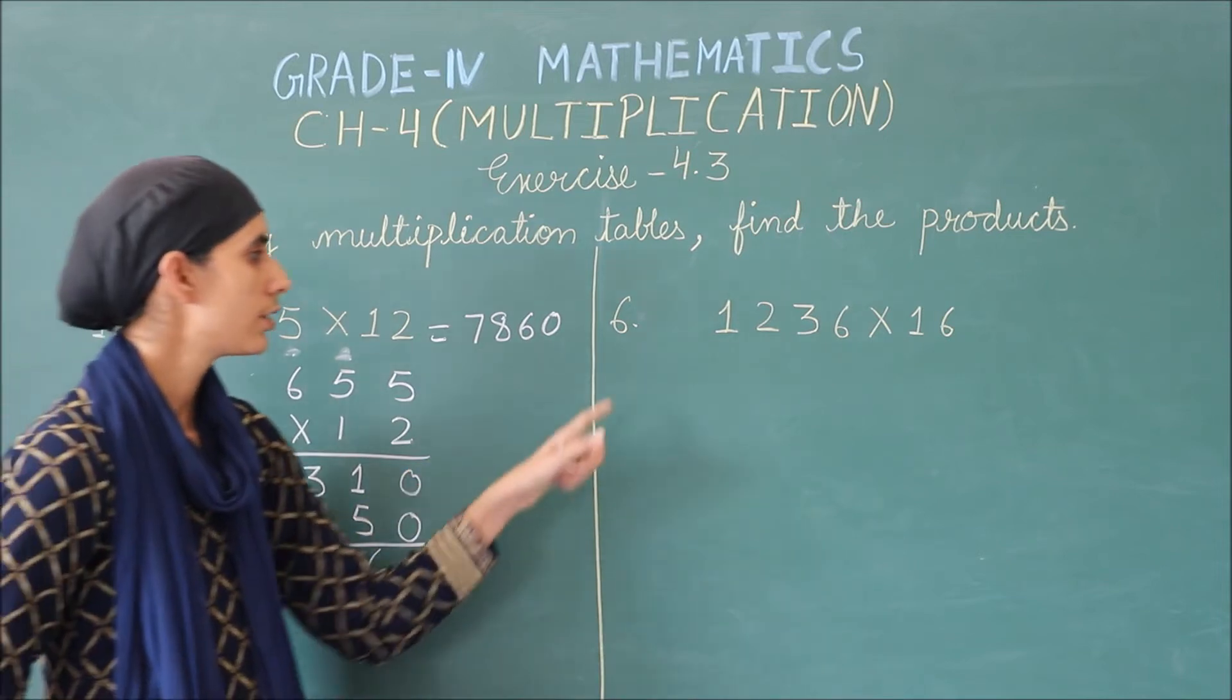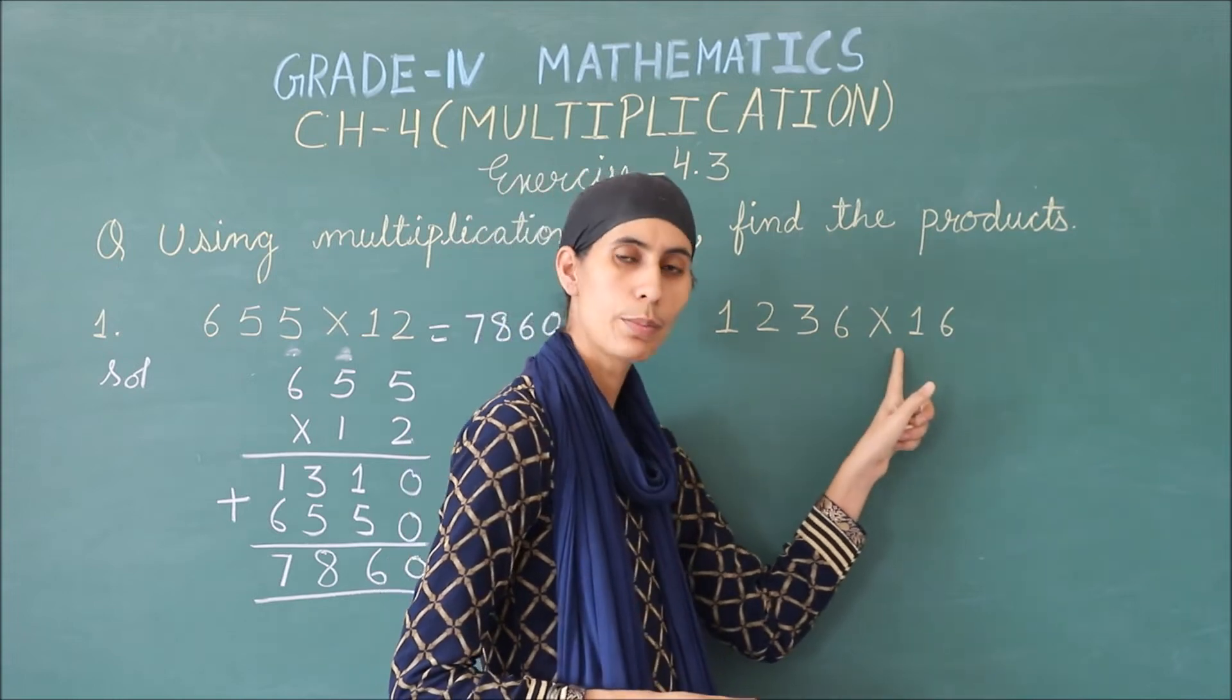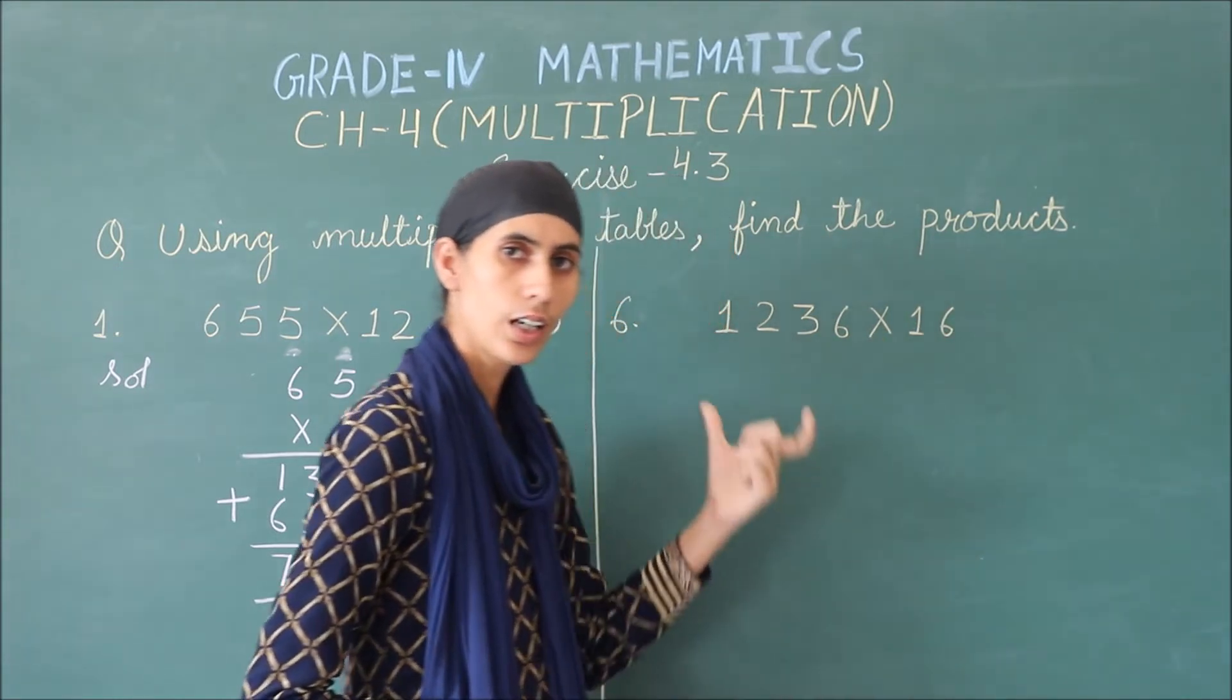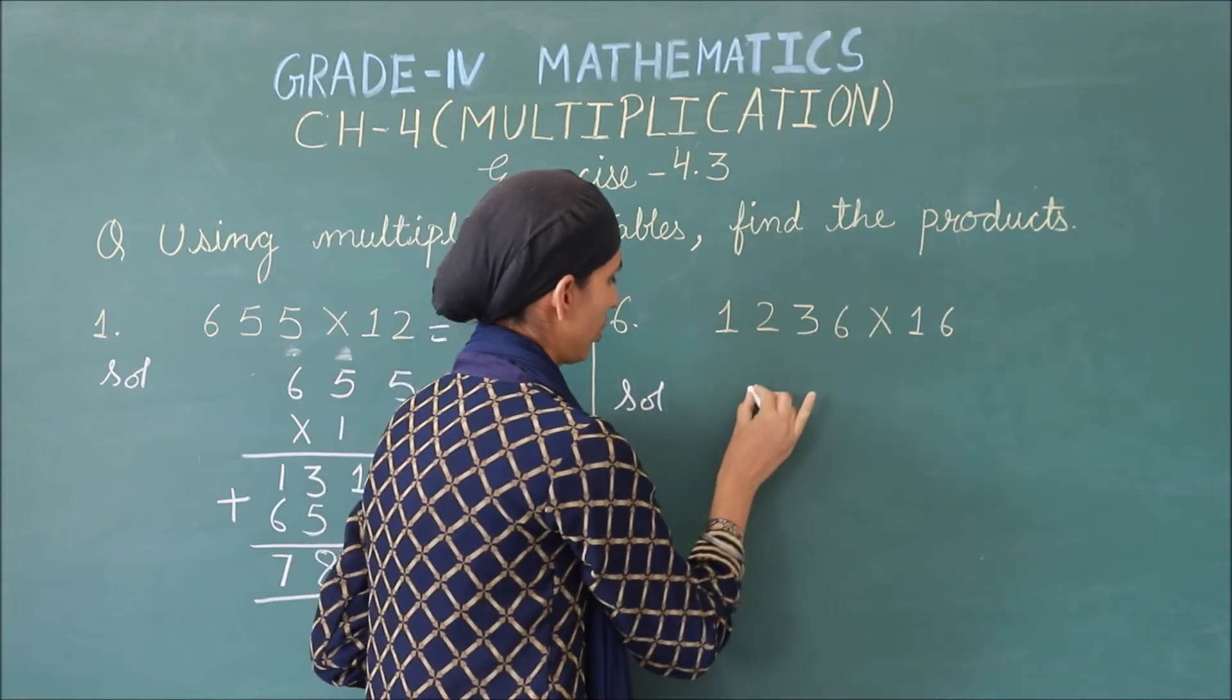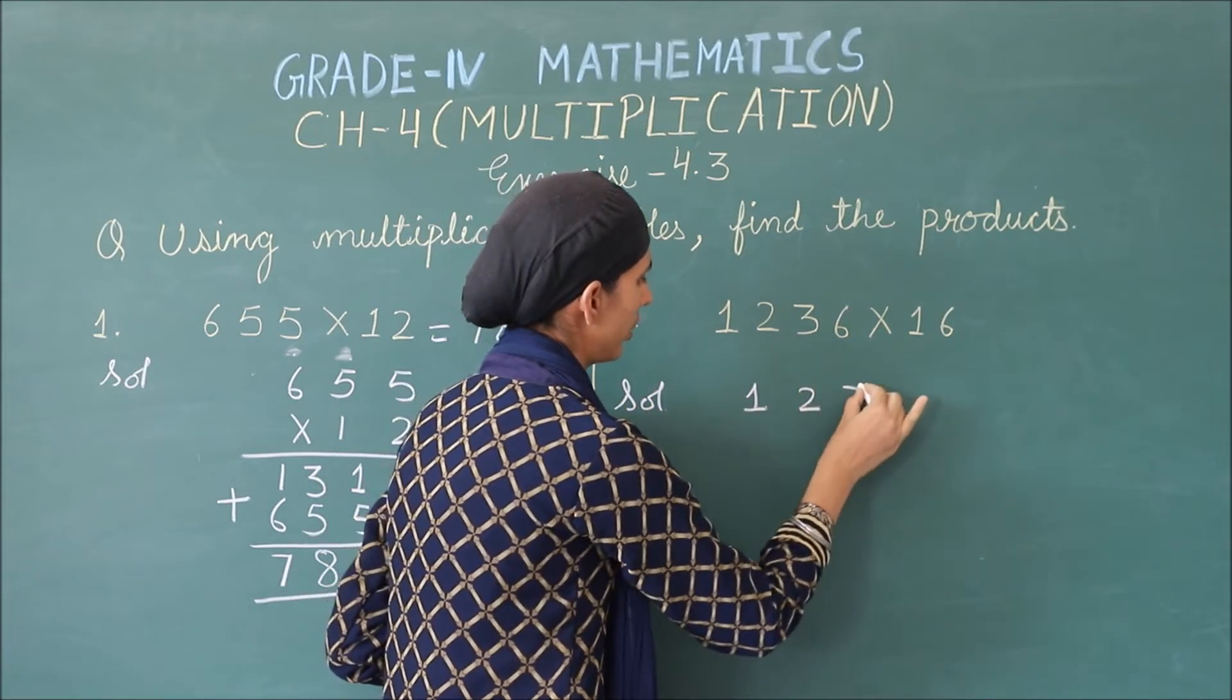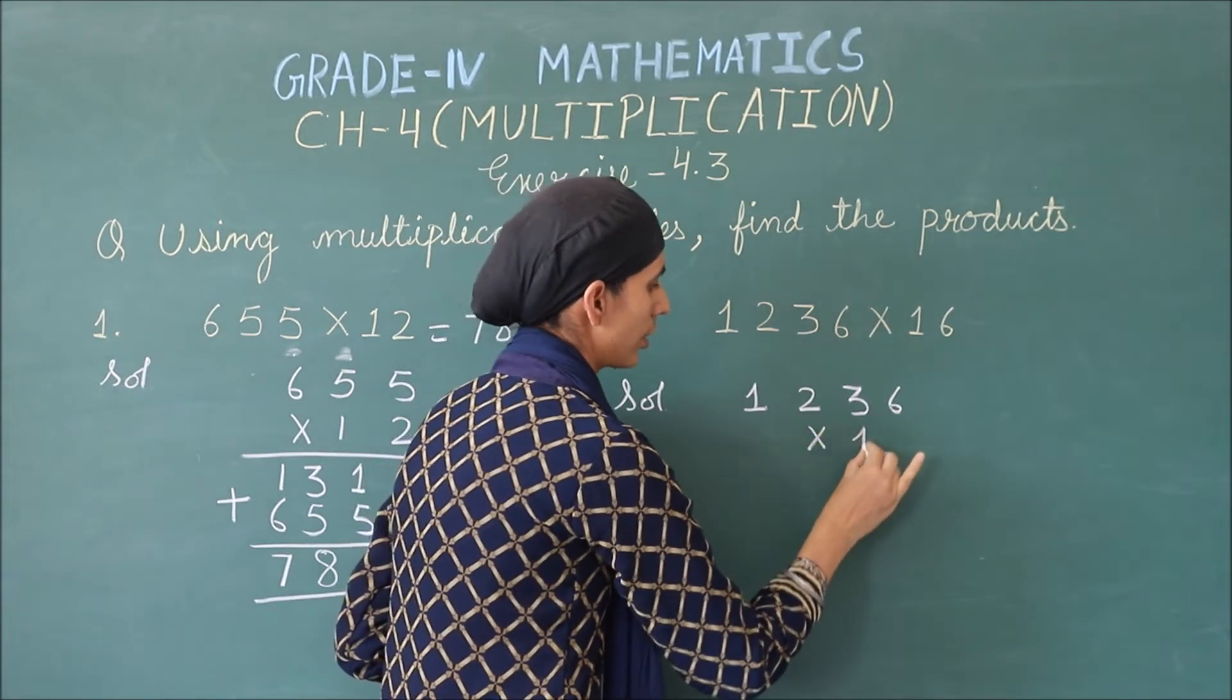Now, come to the 6th part of this question. 1236 multiply by 16. We will write this first. 1236 multiply by 16.